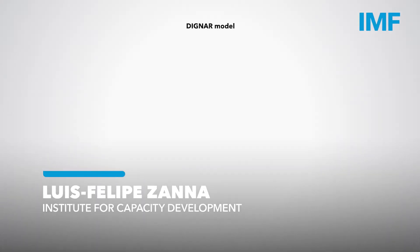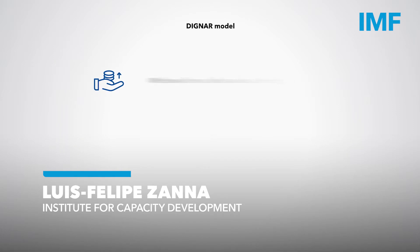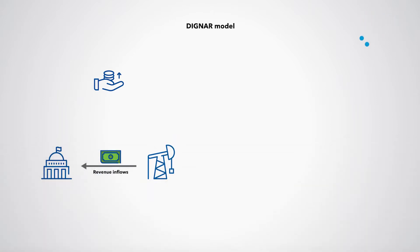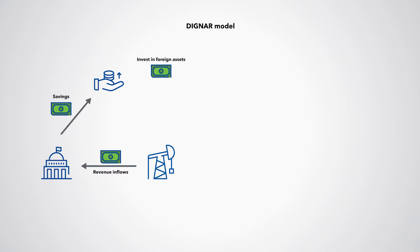In the DIGNAR model, withdrawals from a fund are also a financing source. When government revenue inflows, including natural resource revenues, exceed spending outflows, then savings can be accumulated in this fund. The fund is assumed to be invested in foreign assets denominated in foreign currency.